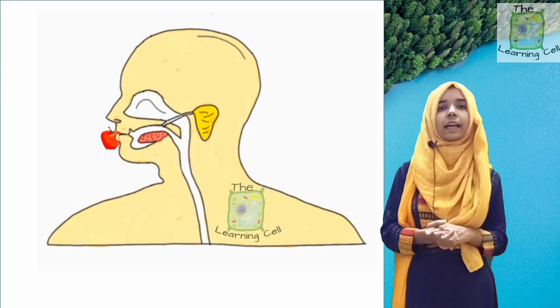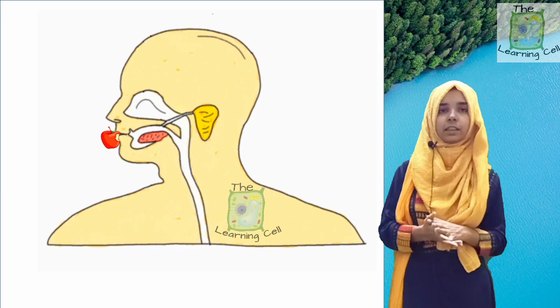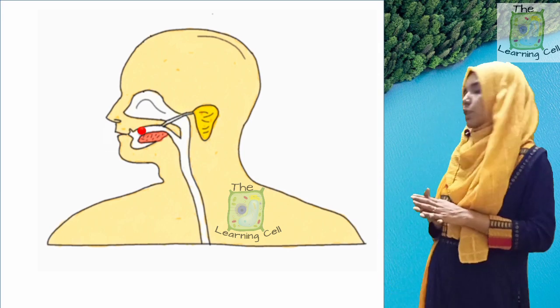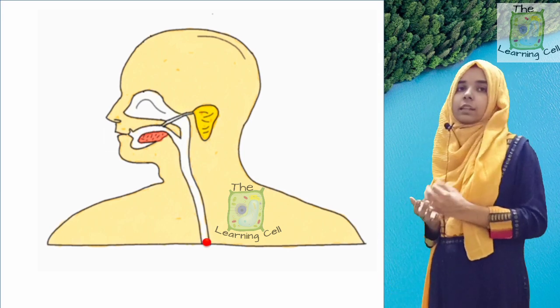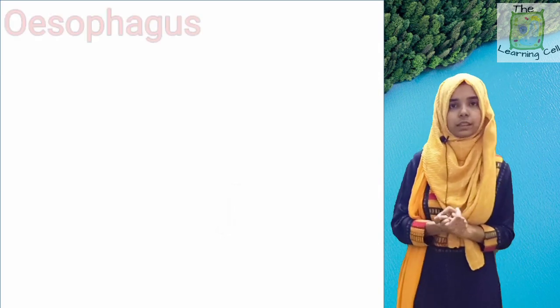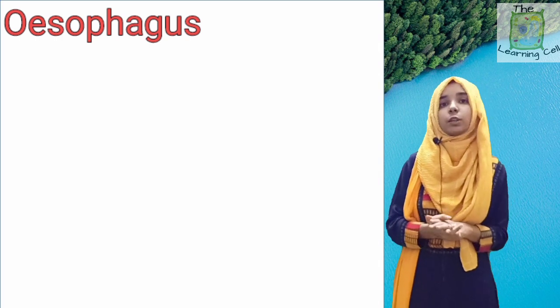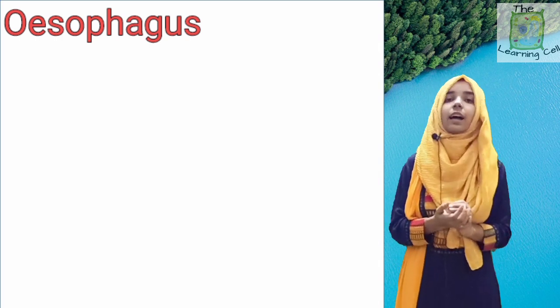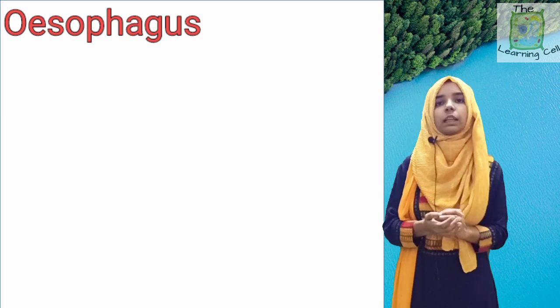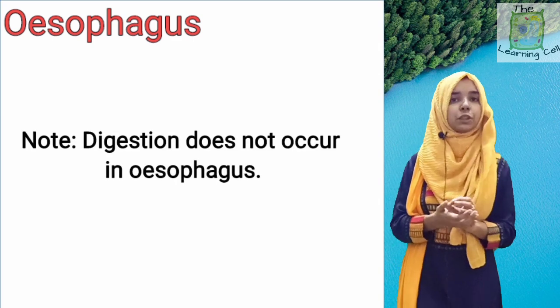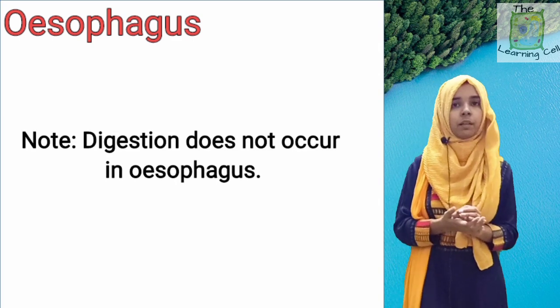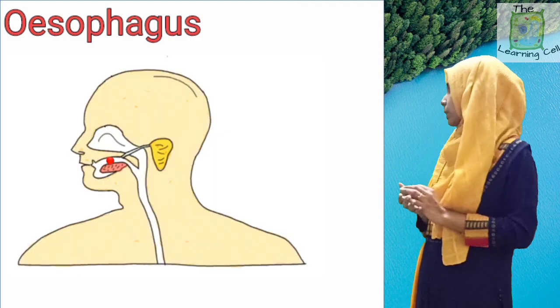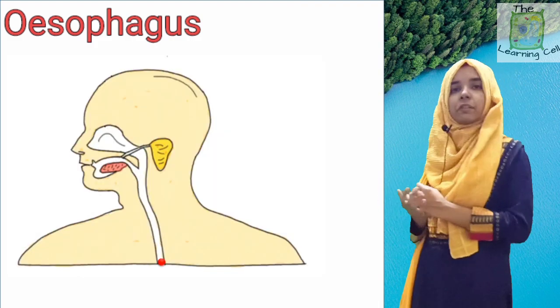We swallow the food and it enters the pharynx, then goes into our food pipe or esophagus. One important thing to note is that the esophagus is just a conducting passage — there is no digestion here. It is simply meant to transfer the food from the mouth to the stomach.